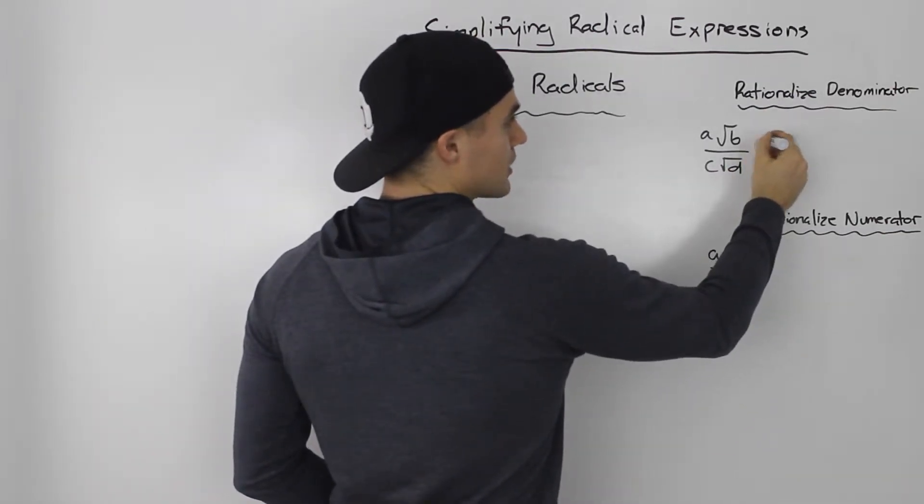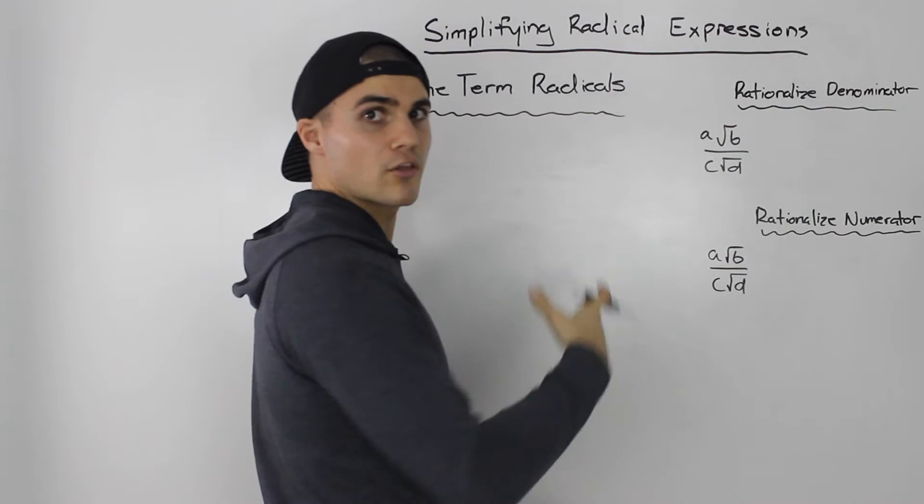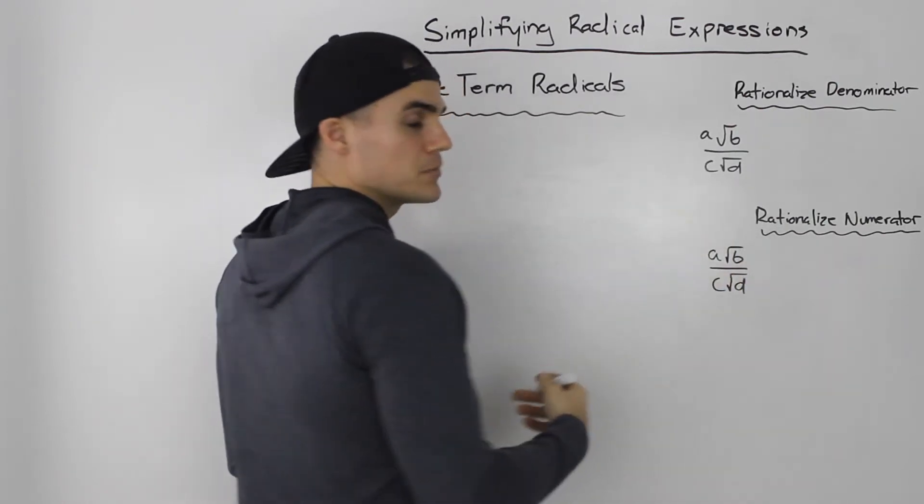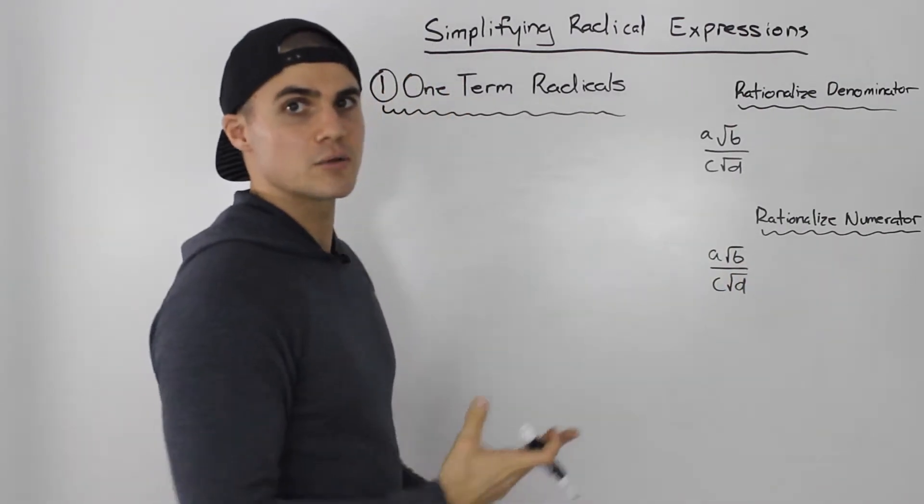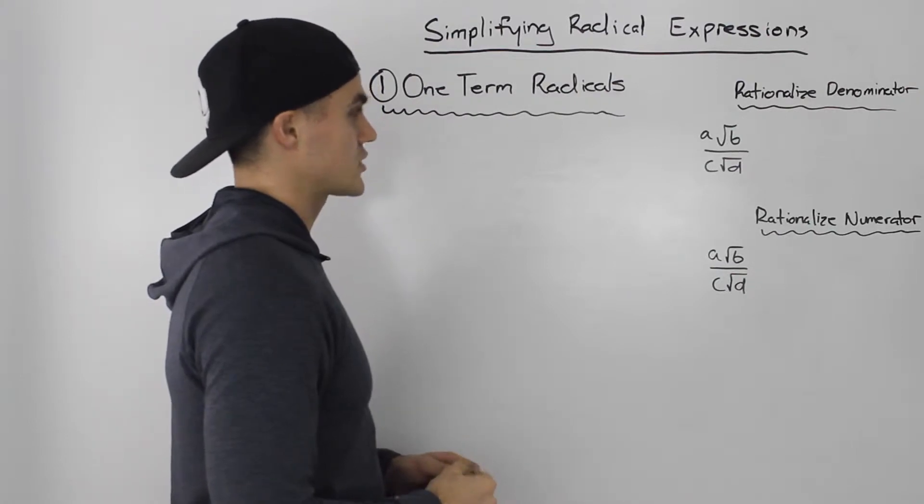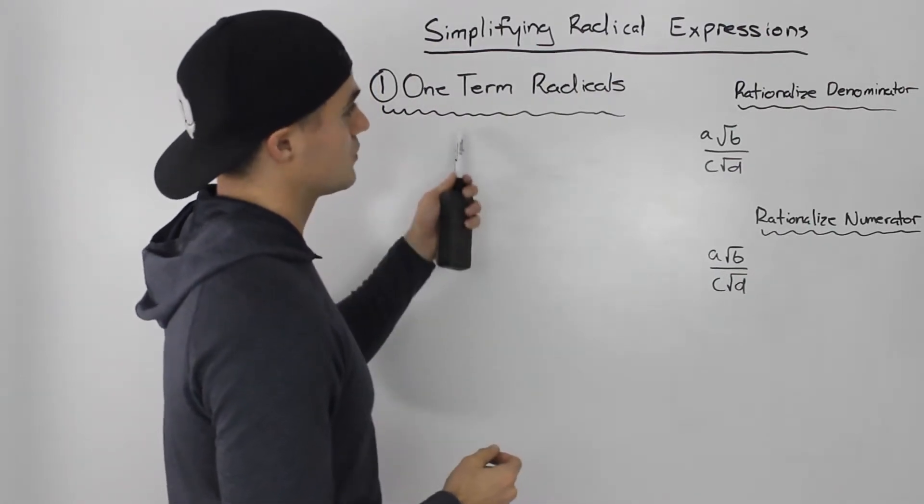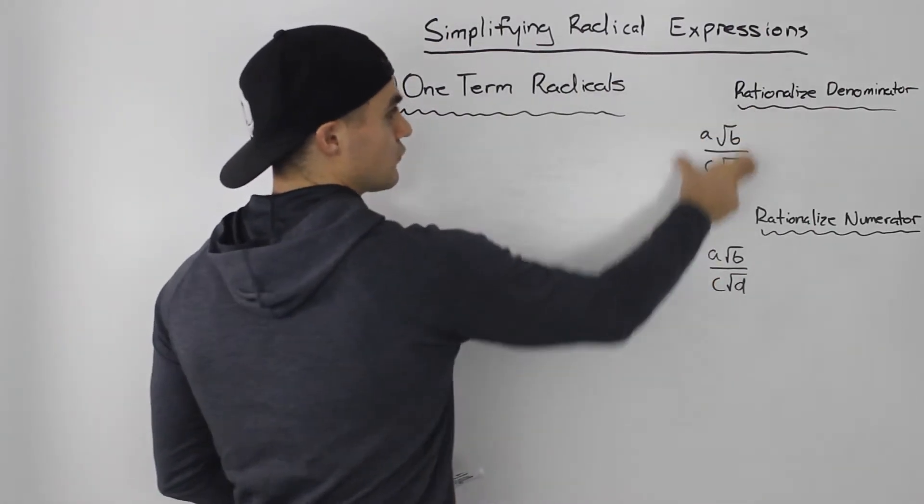As soon as we had maybe plus another integer or even plus another radical, then it would be a two-term radical. We'll be dealing with those in the next section. But for now, let's just deal with one-term radicals. Usually they take the format of this.